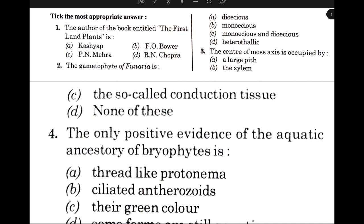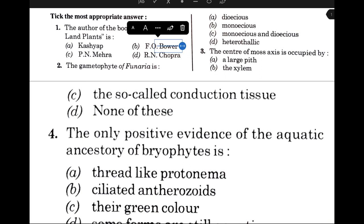The correct answers will be highlighted. The first question: the author of the book entitled 'The First Land Plant' — the answer is option B, that is F.O. Bower. Next, the gametophyte of Funaria — the answer is option B, that is Monoecious.